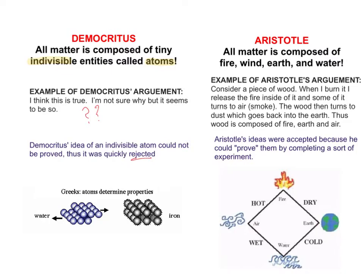About a hundred years later, Aristotle showed that all matter was composed of fire, wind, earth, and water. His idea was that if you have a piece of wood, when you burn it, it gave off fire. It had turned into air or smoke. The wood then turned into dust, which turned back into the earth, and the wood was composed of the fire, the earth, and the air. He had proof of his idea. We now know that it was wrong, but he did have experimental scientific proof according to what they knew at the time.